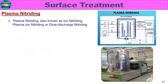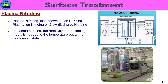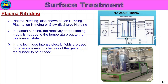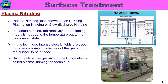Plasma nitriding, also known as ion nitriding or glow discharge nitriding: in this process, the reactivity of the nitriding is not due to the temperature but to the ionized state of the gas. In this technique, intense electric fields are used to generate ionized molecules of the gas around the surface to be nitrided. Such highly active gas with ionized molecules is called plasma, giving the technique its name.